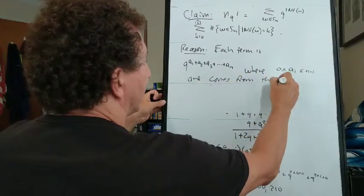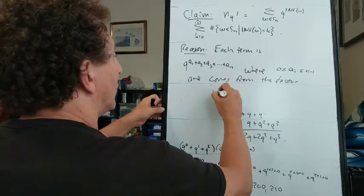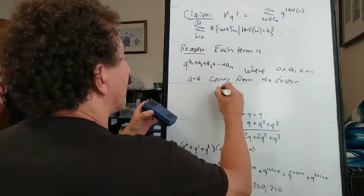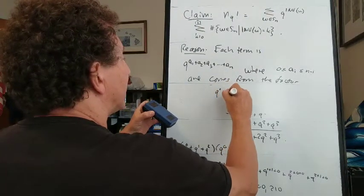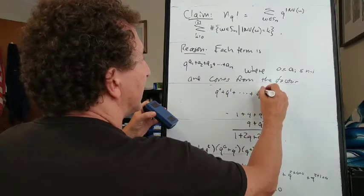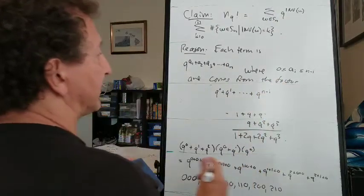Where a i is between 0 and n minus i, and it comes from the factor 1 plus q to the 1 plus q to the n minus i.